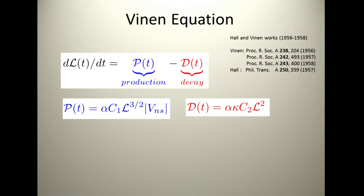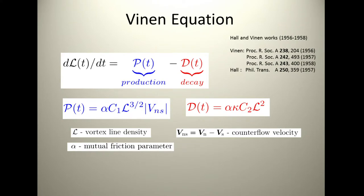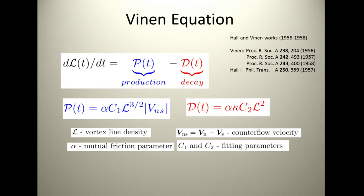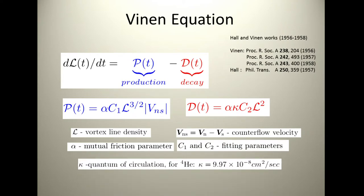He felt the production should be proportional to the difference between the normal and the super velocity. VNS is V normal minus V super. The form of the decay he predicted is going to be proportional to L squared. It cannot depend on VNS because you have decay also where there is no difference in VN and VS.